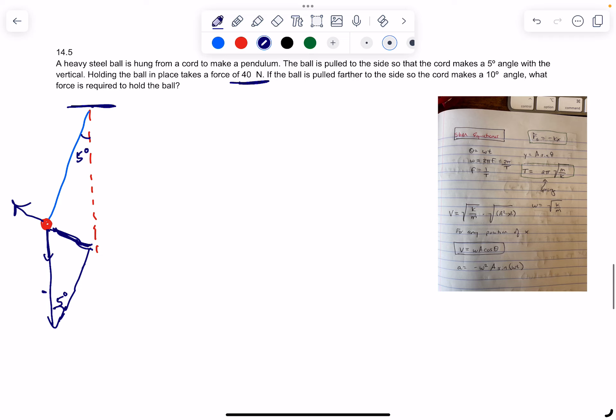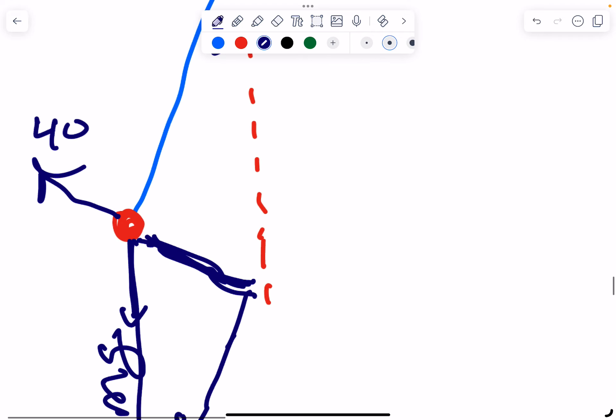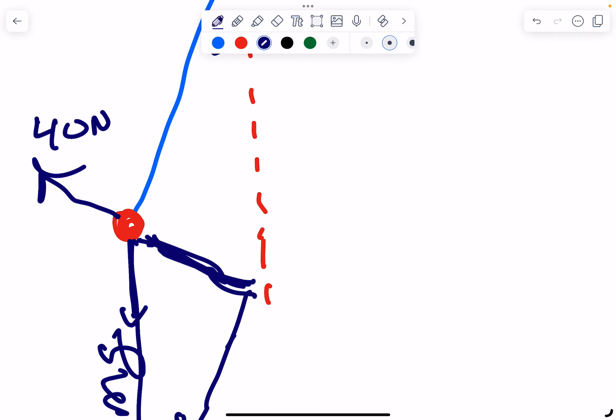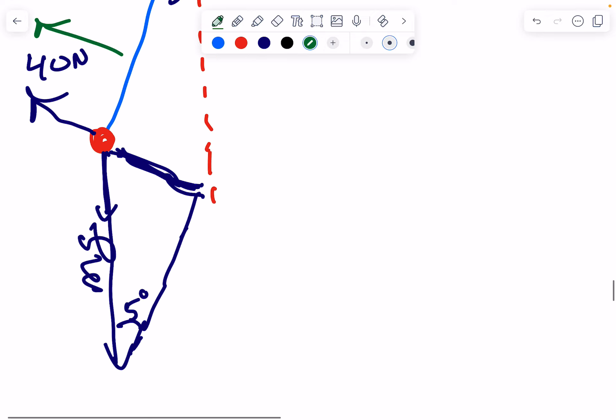Now, we know we have mg, but we know that the force here is 40 newtons, right? So this is 40 newtons, which is pulling it in this direction. So if I know that, the question is, can I find mg? Now, we know an angle, 5 degrees.